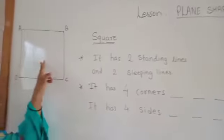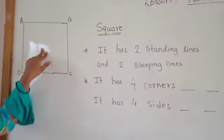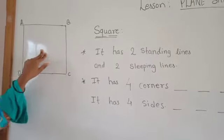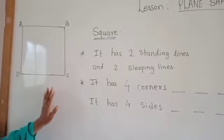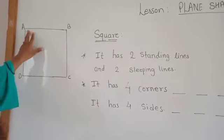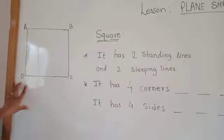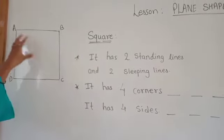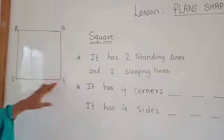This is the square. Now tell me the name of the square. I told you last period that the name of a figure is indicated by its points. The square name is square A, B, C, D.